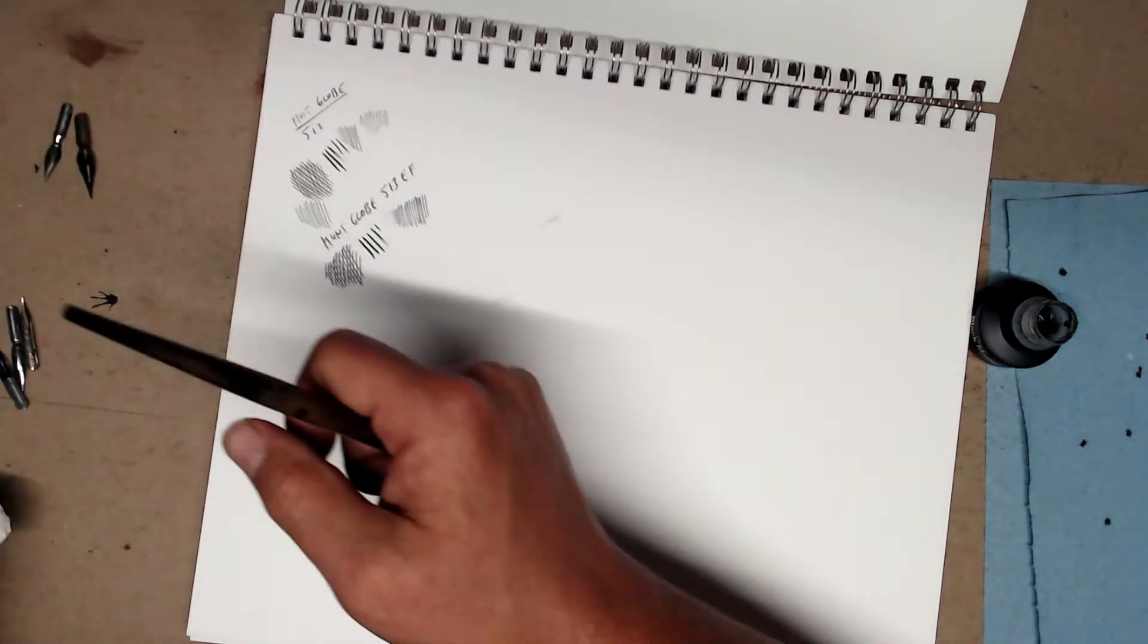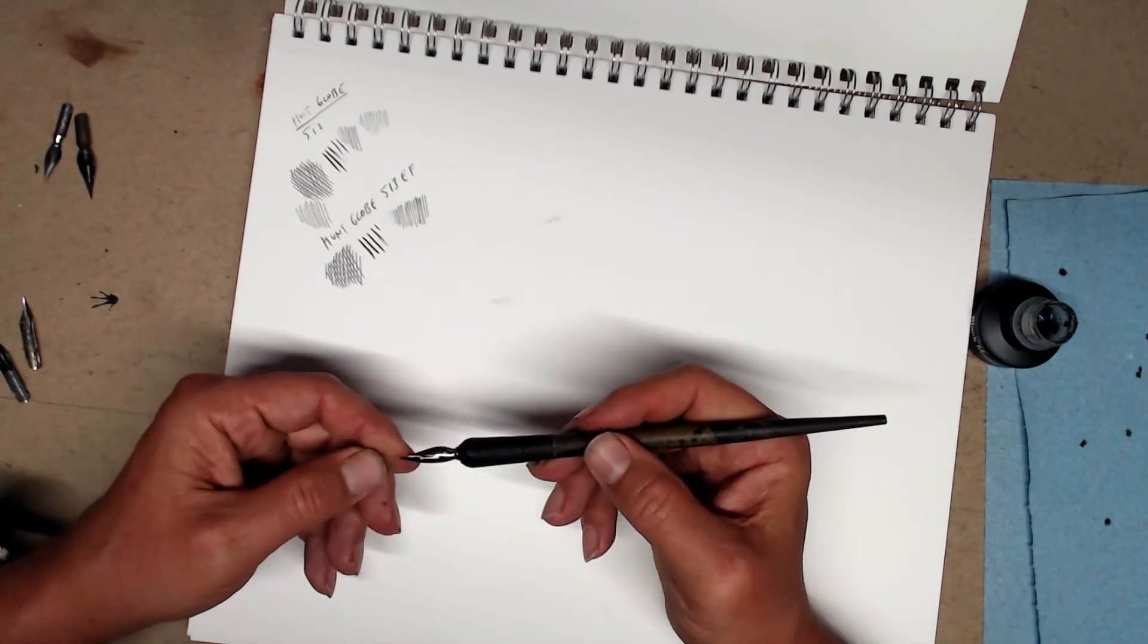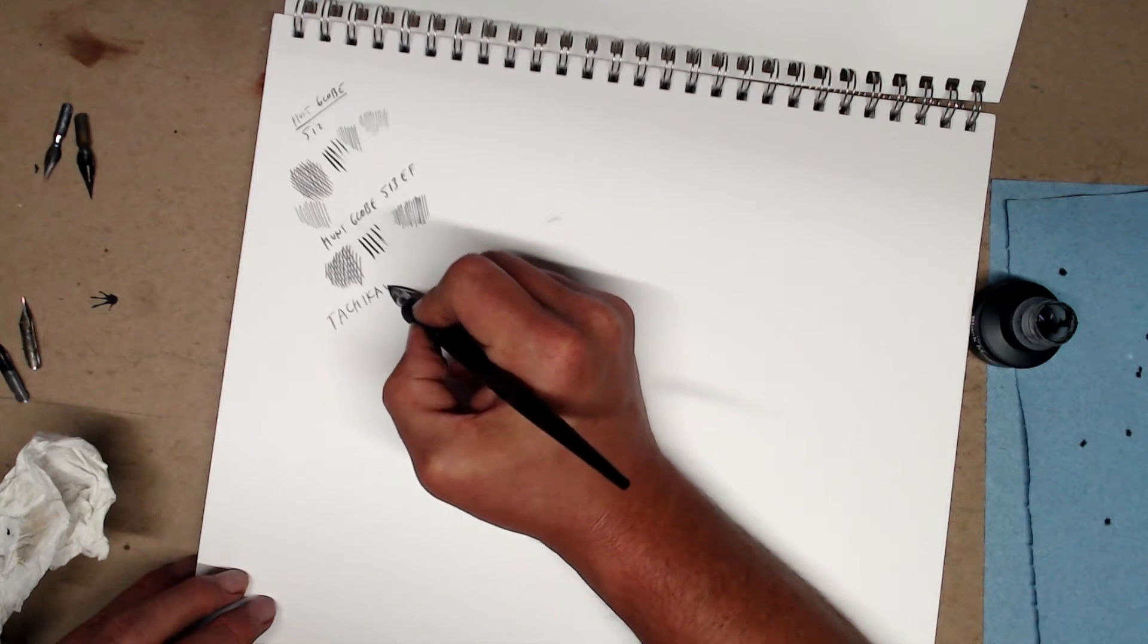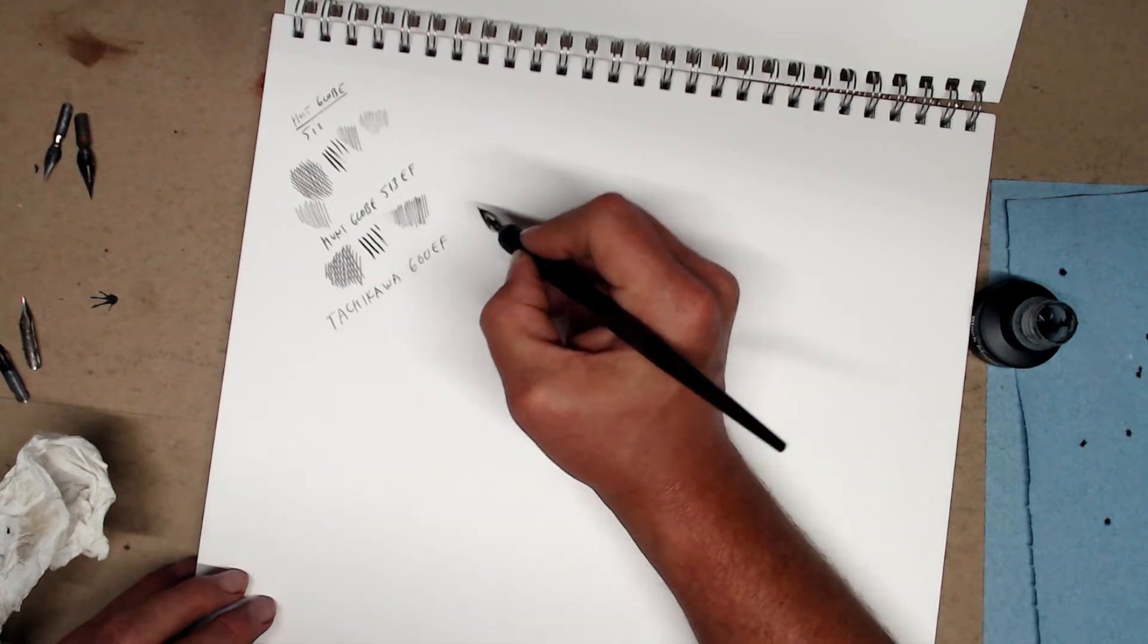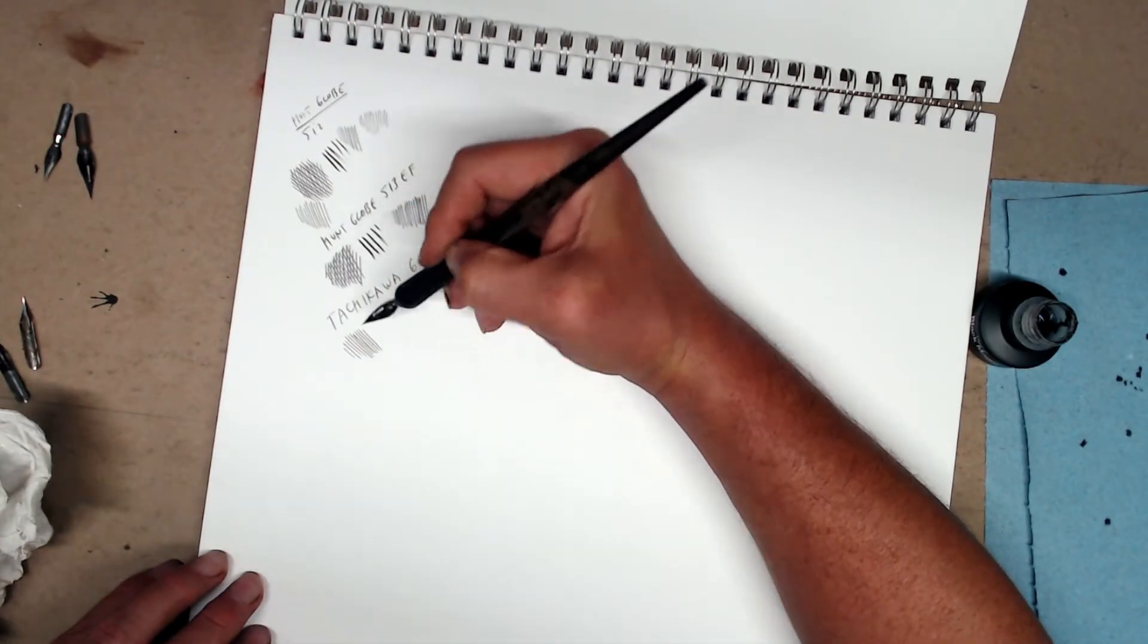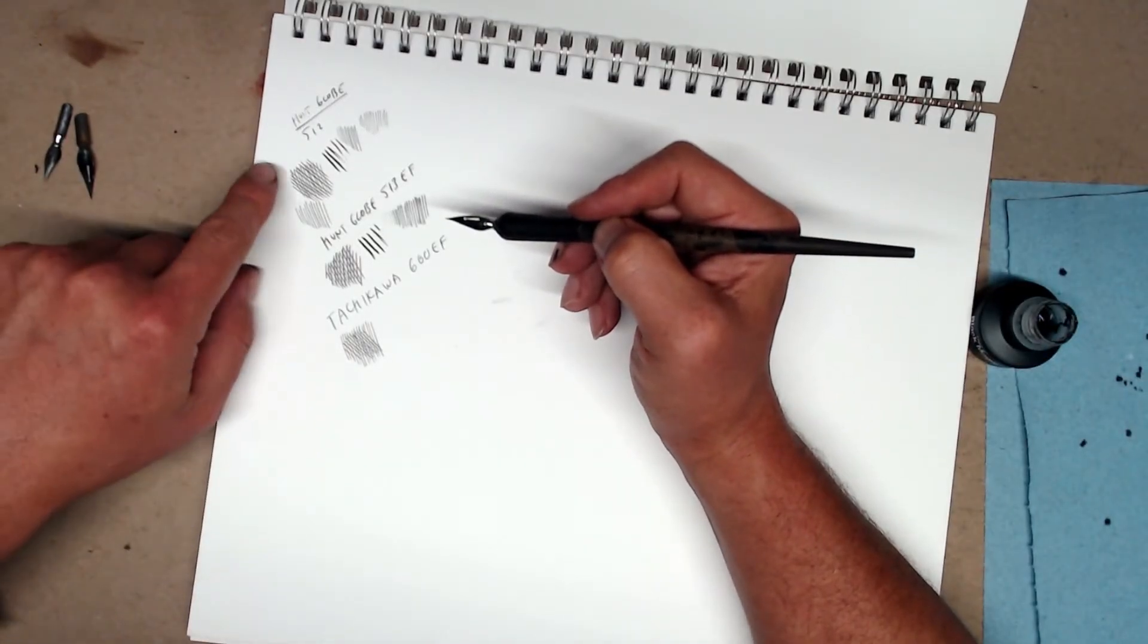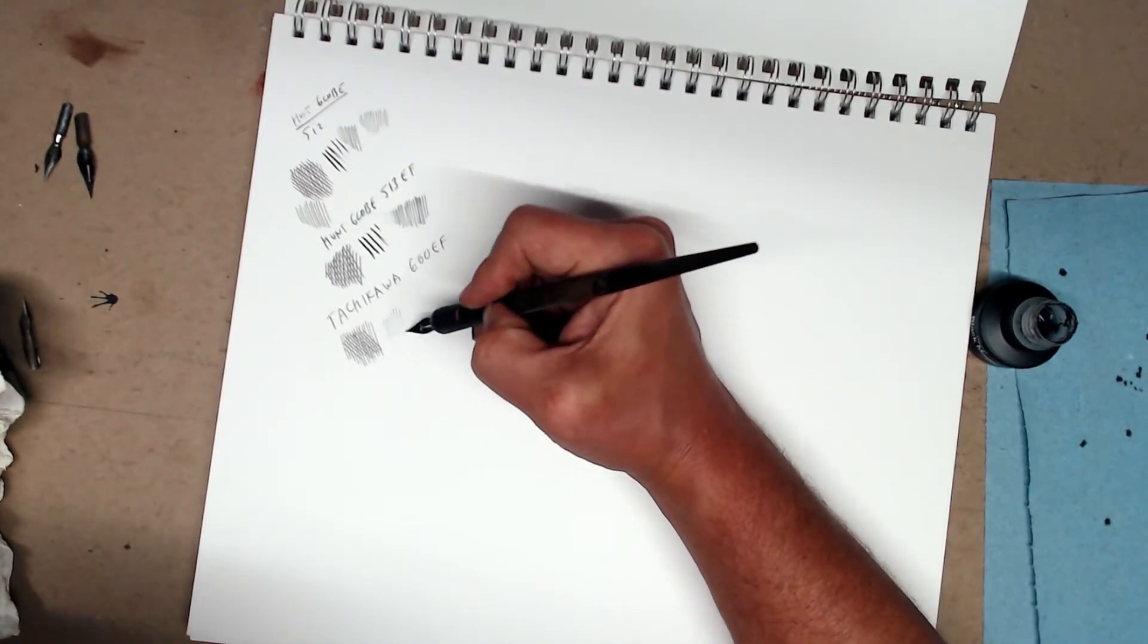There are some excellent options available now from Japan. So one of my favorite pens, and the one I might be doing most of the demos with, is made by Tachikawa. This is their 600EF. The type of work I do requires a very fine line. I really like cross-hatching. I like building up many, many layers of hatch in my drawings.